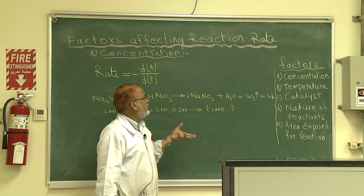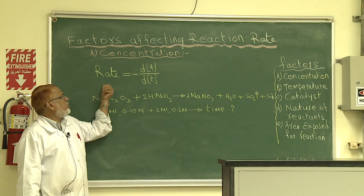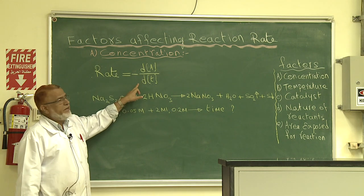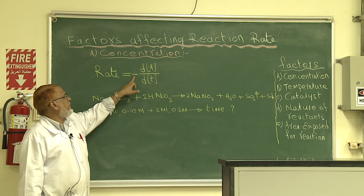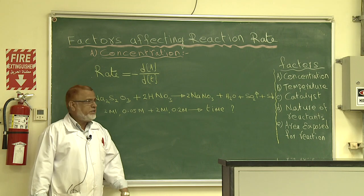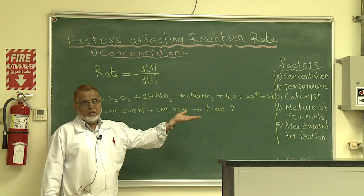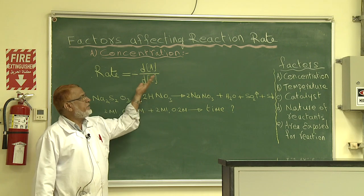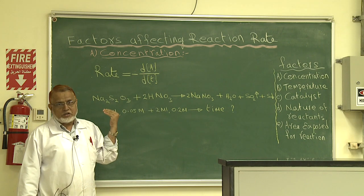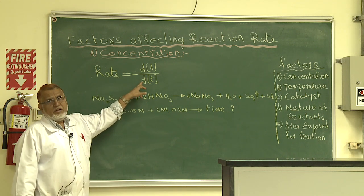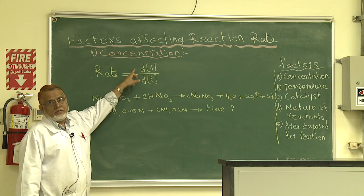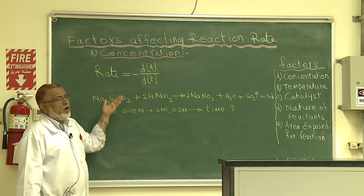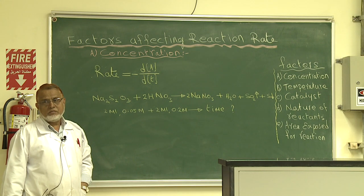Rate can be mathematically written as minus dA/dt, where d is the change in concentration and dt is the change in time. The minus sign indicates the decrease in concentration of the reactants as the reaction progresses towards the product. If the reaction is reversible, this becomes plus, as the concentration of reactant increases when the reaction goes in the opposite direction. With this equation we can find the rate of the reaction and the factors influencing it.